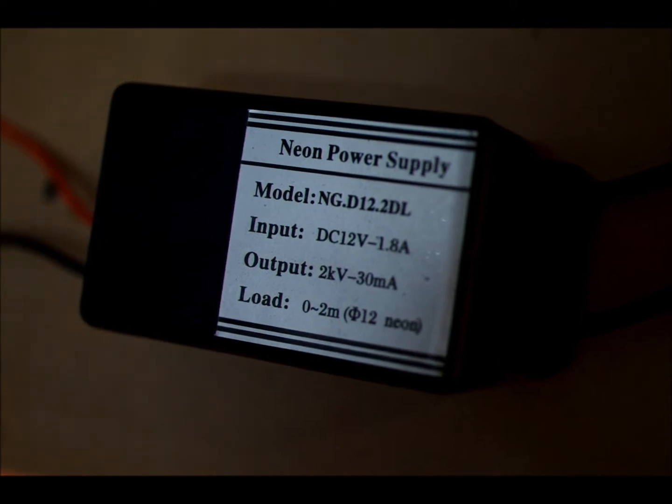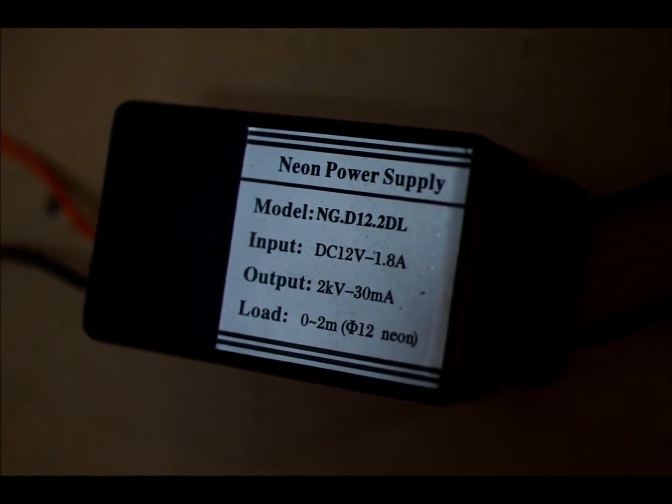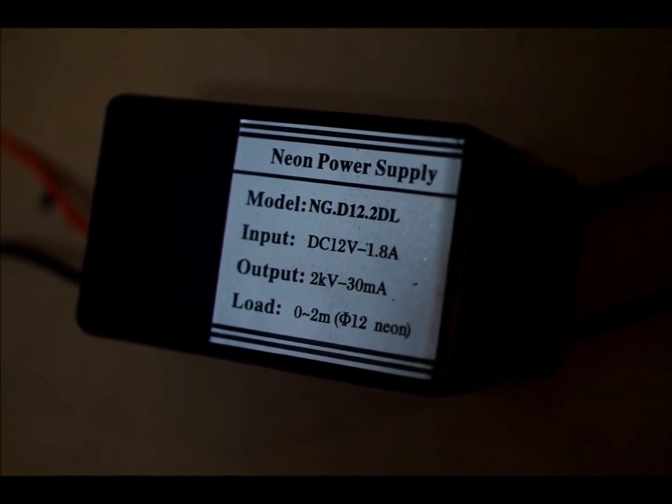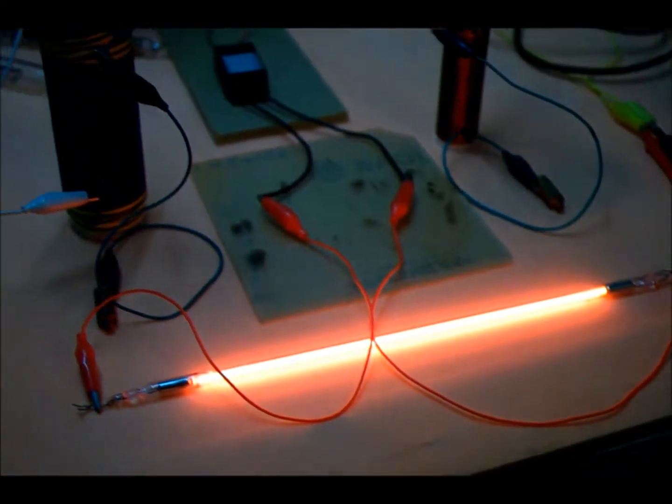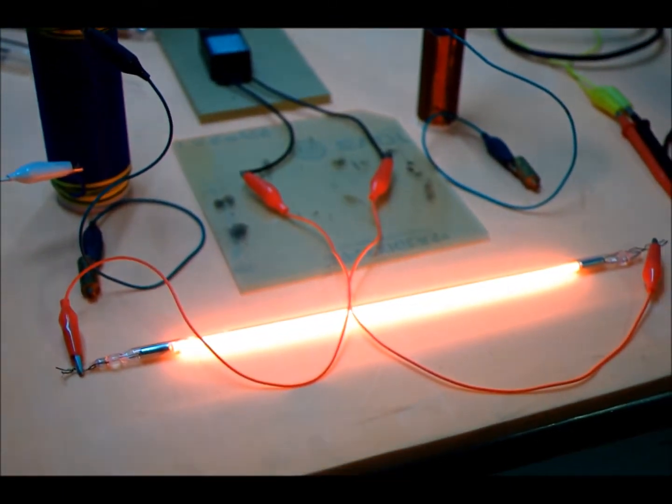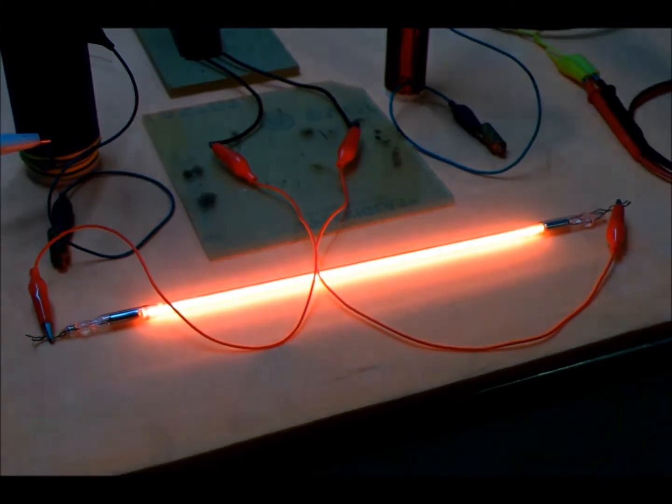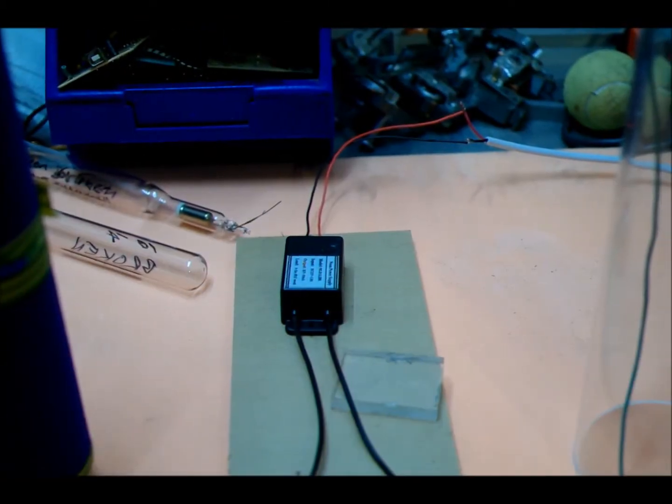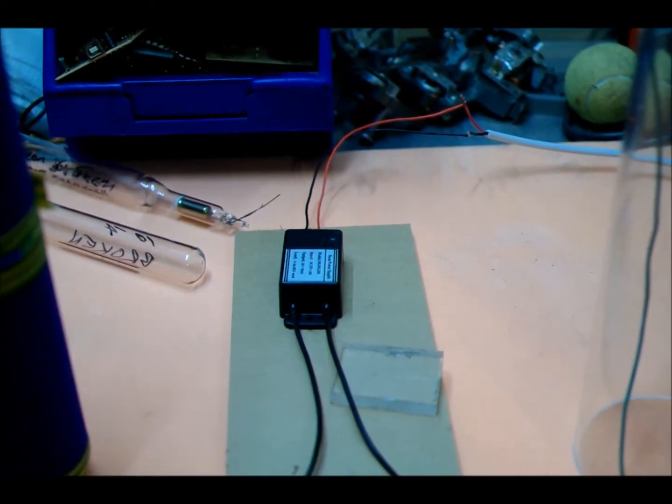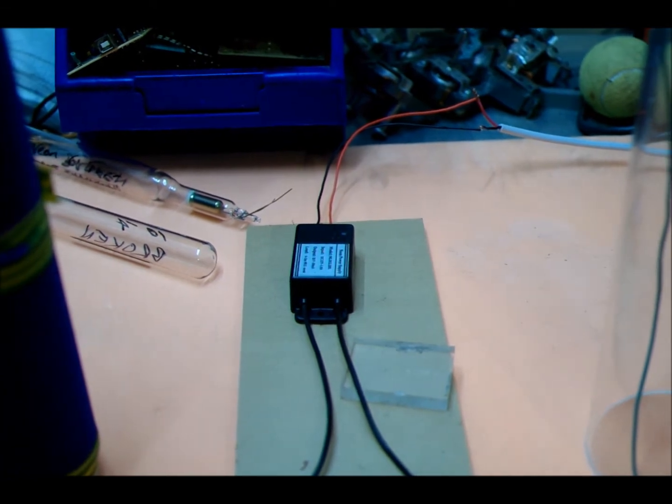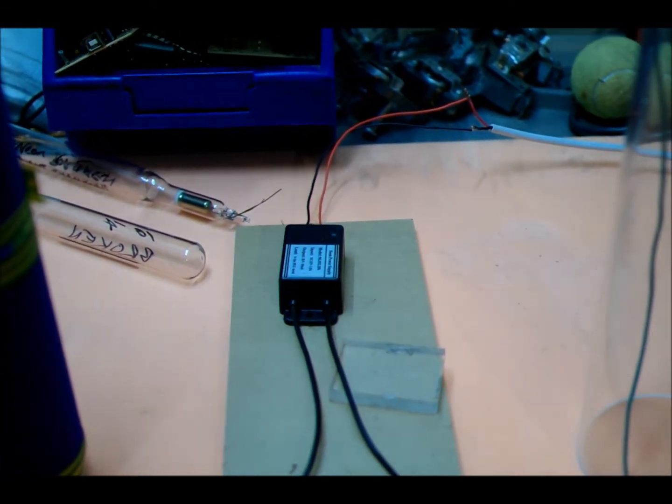That goes straight out to this neon sign transformer. This takes the 12 volts DC and converts it to 2 kilovolts at 30 milliamps, going straight out to the red leads to a neon sign tube. Now we're going to make some modifications to convert a standard neon sign system into a high frequency single electrode transformer.